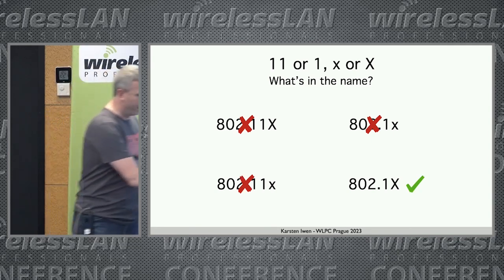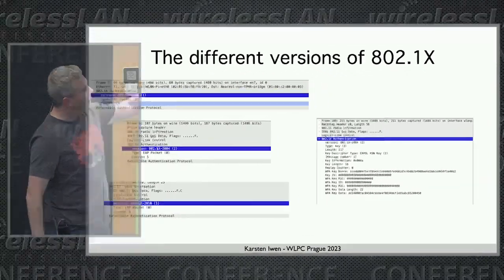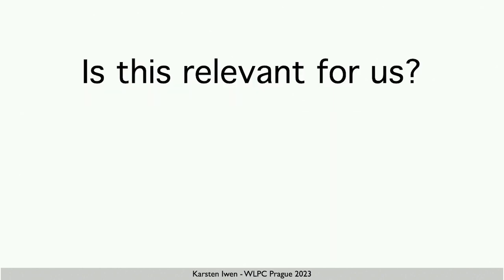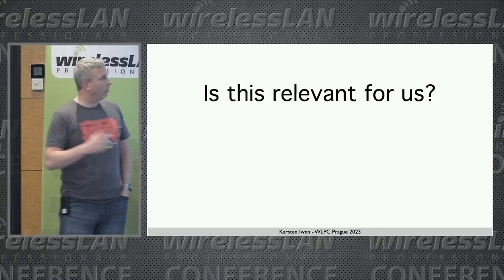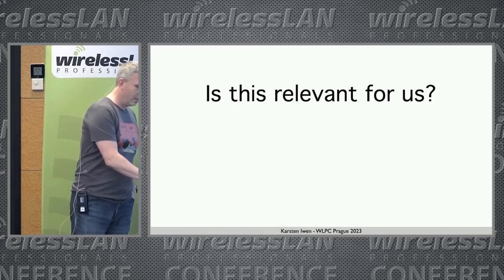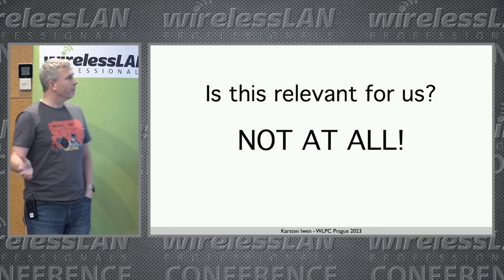But back to the topic. When we do wireless captures, we see our different .1X versions: 2001, 2004, 2010. The question is: do we have to take care about that as a wireless engineer? Is it relevant for us? And what I learned — not at all. But why, and what are the differences?